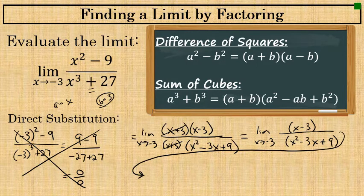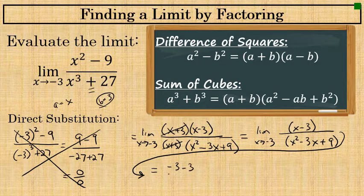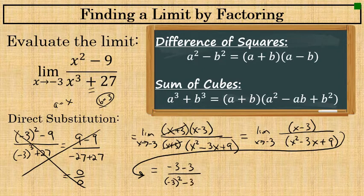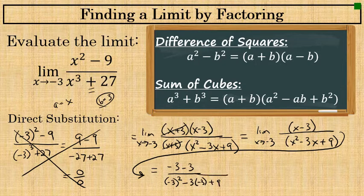Substituting negative 3 for x, the numerator becomes negative 3 minus 3, and the denominator is negative 3 squared minus 3 times negative 3 plus 9. This gives a numerator of negative 6.